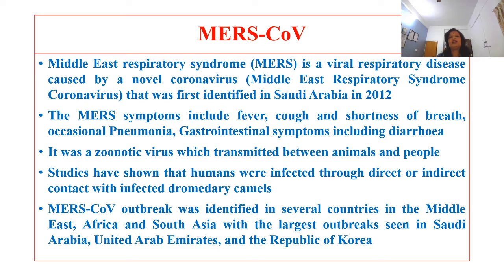The second one was MERS coronavirus — Middle East Respiratory Syndrome — a respiratory disease caused by a newer coronavirus that was first identified in Saudi Arabia in 2012. The MERS symptoms include fever, cough, shortness of breath, occasional pneumonia, and gastrointestinal symptoms including diarrhea.